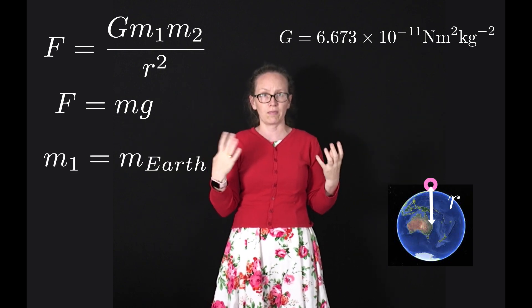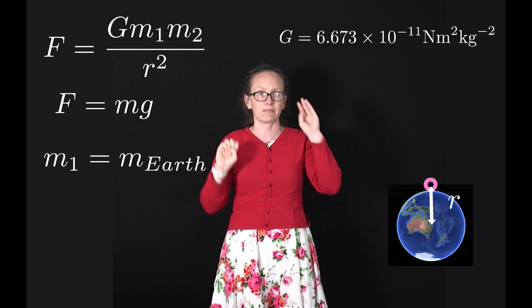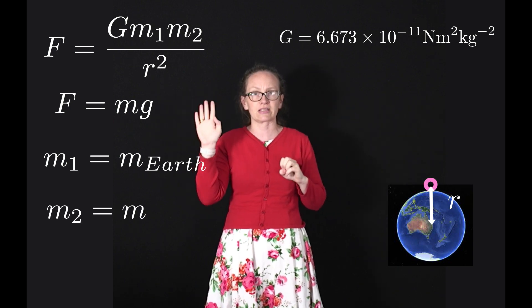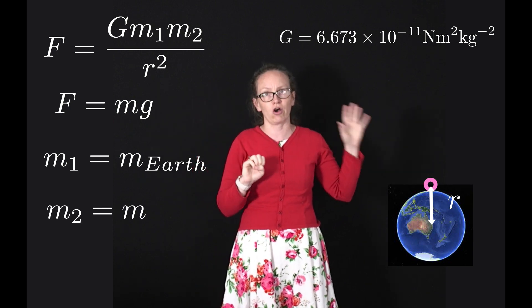Our two masses in the equation are: mass 1 can be the mass of the Earth, and mass 2 can be the mass of the object.